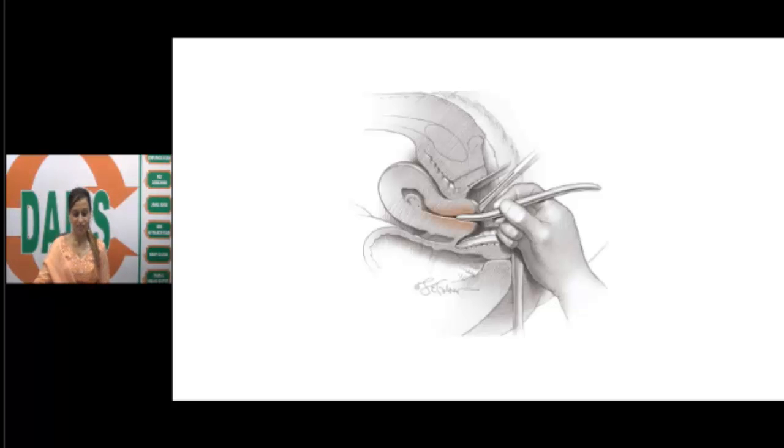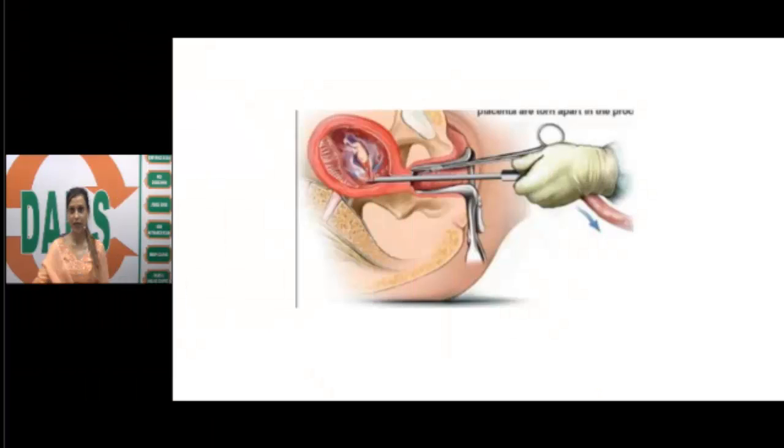Once you have dilated the cervix, we are going to introduce the cannula into the uterus. What are the important things that you have to understand here? The cannula has been connected to the hosing of the suction machine. When you are introducing the cannula into the uterus, the machine should be switched off. The machine should be switched on only once you are inside the uterine cavity. When you are inside the uterine cavity, we are going to move the cannula around 360 degrees inside the uterus till all the products have been evacuated, which means we need to know what is the end point of suction evacuation.